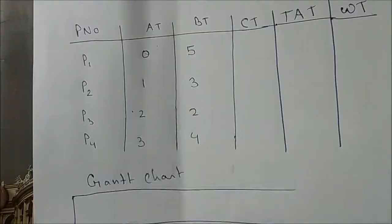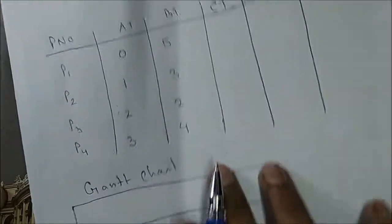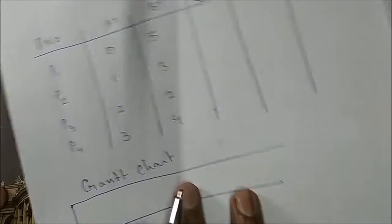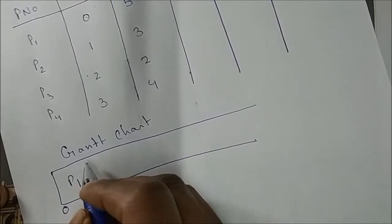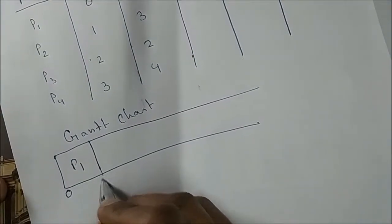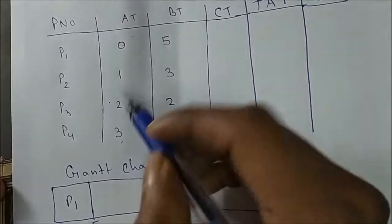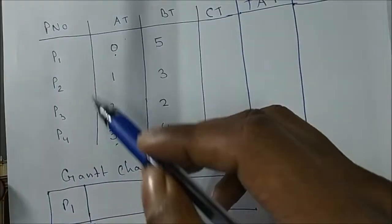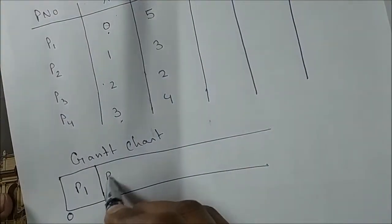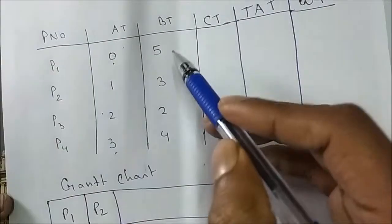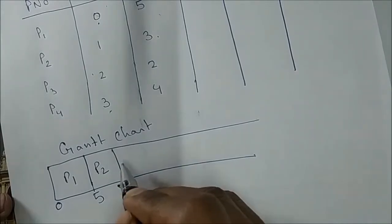Since it is non-preemptive, each process will run until full execution. P1 arrives at time zero with a burst time of 5, so P1 runs from 0 to 5. By time 3, all processes have arrived. Since the algorithm is FCFS, P2 runs next — burst time 3, completing at 8.